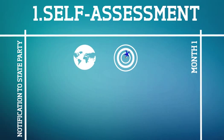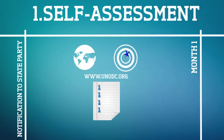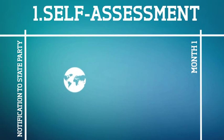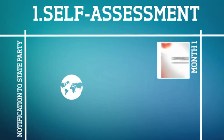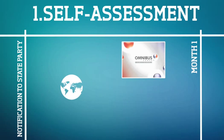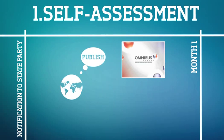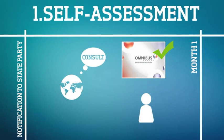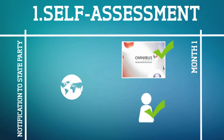The names of the focal points are generally included among the list of country review experts that UNODC publishes on its website. The country reviewed has one month to fill out the self-assessment checklist using special software. Governments are given the option to publish the checklist, and are encouraged to consult with civil society in preparing their checklist responses.